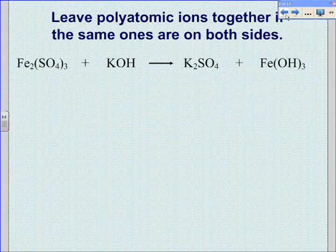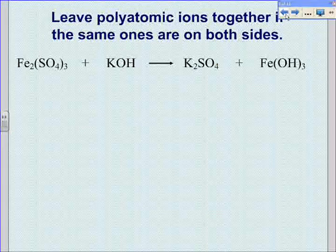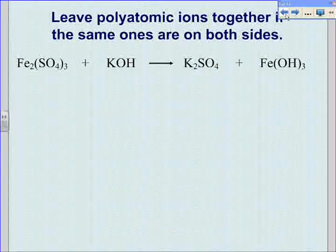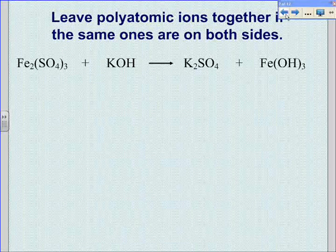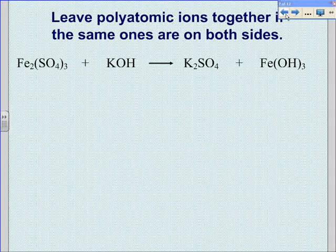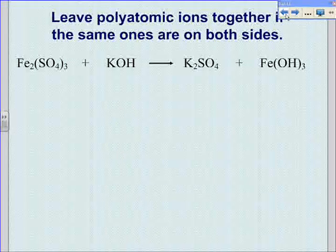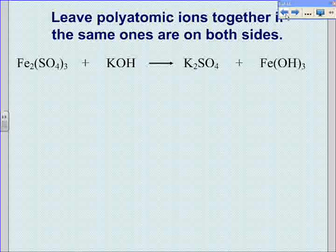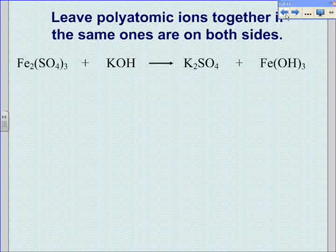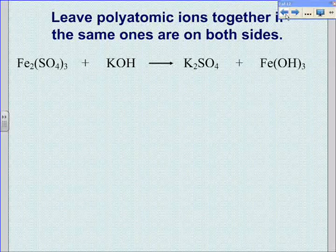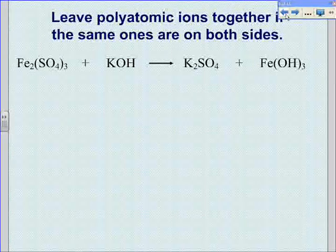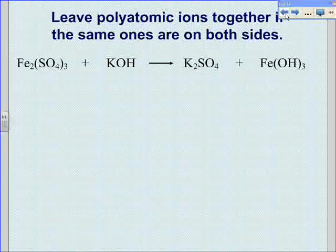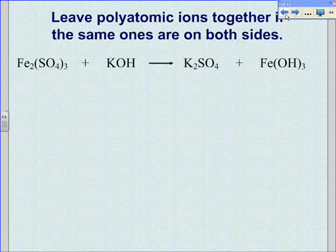When balancing equations that have polyatomic ions in them, the easiest thing to do is to leave each polyatomic ion together while you balance the equation. You can only do this, however, if you have the exact same polyatomic ion on the right side as you do on the left.